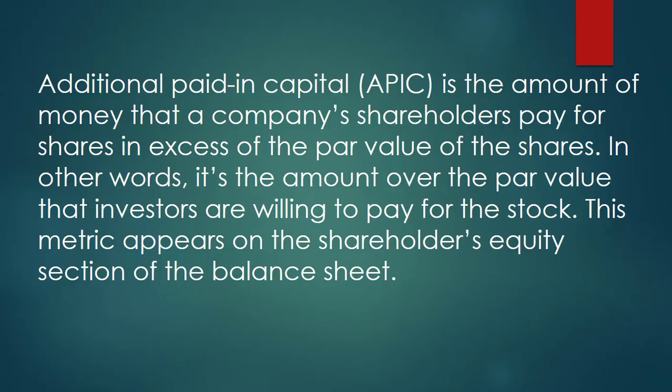Additional paid-in capital is the amount of money that a company's shareholders pay for shares in excess of the par value of the shares. In other words, it is the amount over the par value that investors are willing to pay for the stock. This metric appears on the shareholders' equity section of the balance sheet.